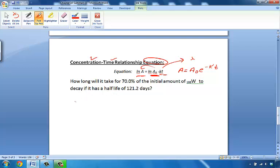So, the question asks, how long will it take for 70% of the initial amount of tungsten 188 to decay if it has a half-life of 121.2 days? So, if 70% has already decayed from an original amount of 100%, that means 30% is remaining.